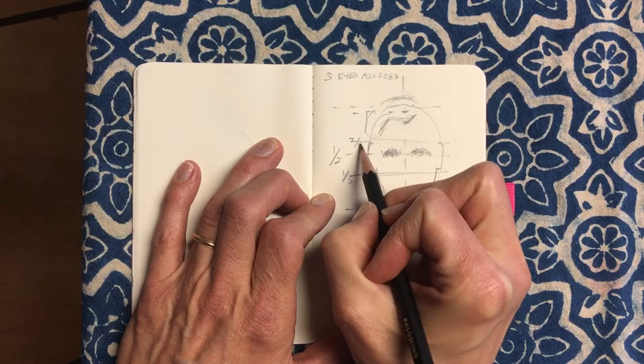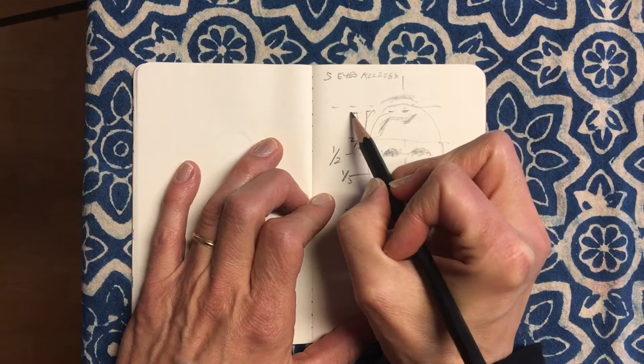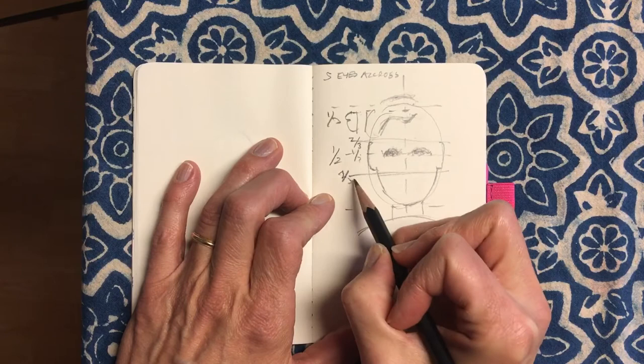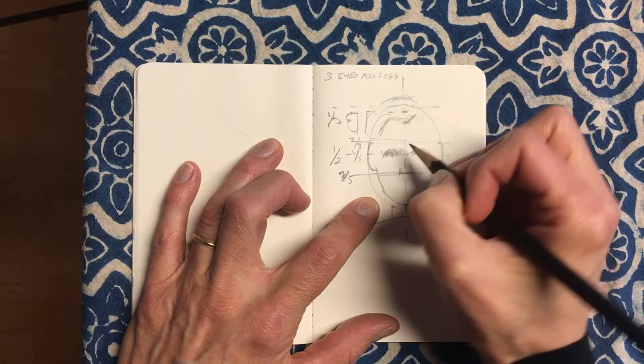And then up to our imaginary line above the hairline there, so there's a third: one third, two thirds, or three thirds anyway. And this is where we're gonna stick our nose, the bottom of our nose, and our eyebrows.